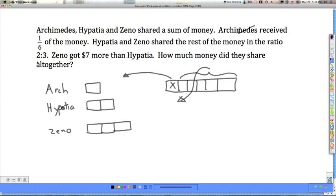All right, so we've used that piece of information. Zeno got $7 more than Hypatia. Well, right here is the extra that Zeno has more than what Hypatia has. That's got to be $7. That tells us that each one of these units is $7. How much money did they share all together? There are 6 units. 6 times 7 equals $42.